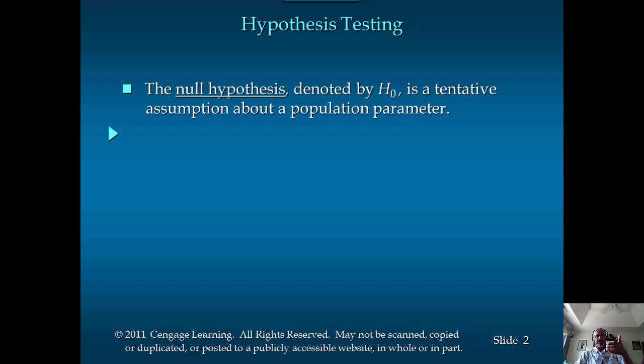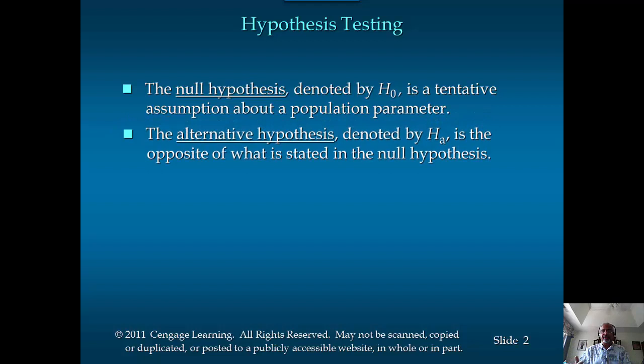We start hypothesis testing by stating a set of two hypotheses. One is called the null hypothesis, denoted H sub zero, and that represents the widely held belief or the status quo situation. Then you have the alternative hypothesis, which is the logical opposite of the null hypothesis. Usually, you'll put a condition that you want to prove in the alternative hypothesis, so that when you reject the null hypothesis, you would have proved that the alternative hypothesis is true.